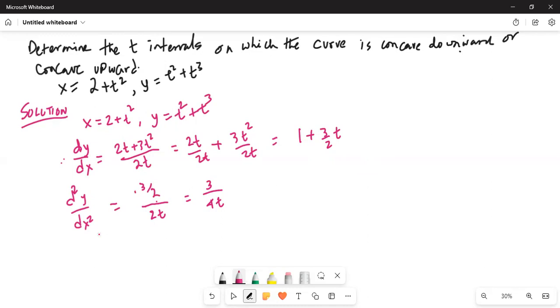When t is greater than 0, it is concave upwards. And when t is less than 0, it is concave downwards.